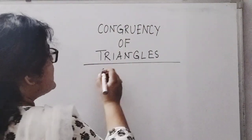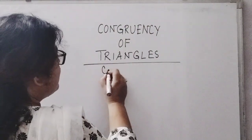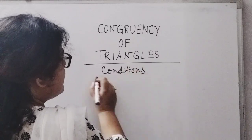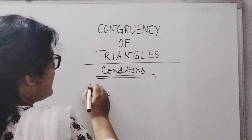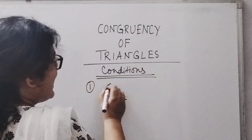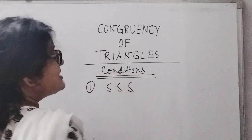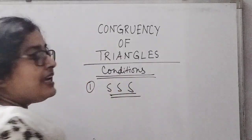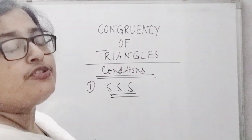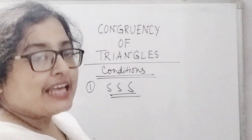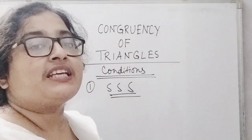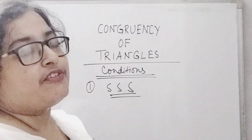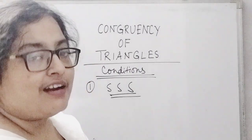The conditions of congruency are: first of all, SSS — side-side-side congruency. What does it mean? If in two triangles you find that three pairs of corresponding sides are of same measurement, then you will conclude that the triangles are congruent.